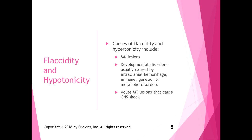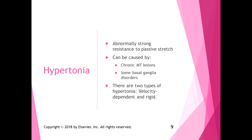Hypotonia is a lessened response to passive stretch. Hypertonia is an abnormally strong resistance to passive stretch, and it can be caused by chronic motor tract lesions or some basal ganglia disorders like Parkinson's. There are two types of hypertonia: velocity-dependent and rigid — usually with Parkinson's it's rigid.